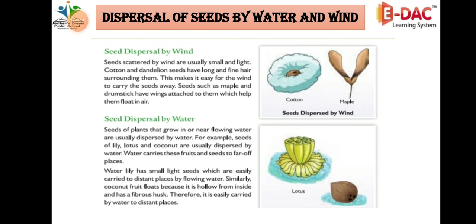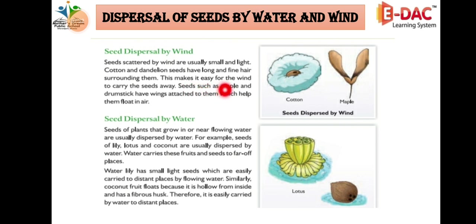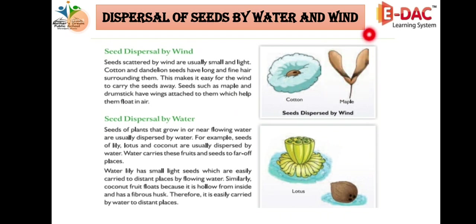Cotton and dandelion seeds have long and fine hairs surrounding them — you have seen cotton, the soft part; it has big hairs all around it. This makes it easy for the wind to carry the seeds away. Seeds such as maple and drumstick have wings attached to them which help them float in the air. These wings help the seeds float in the air from one place to another.